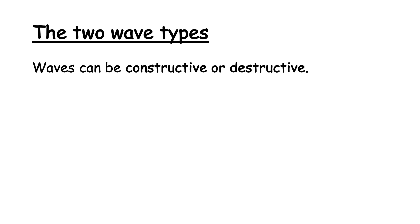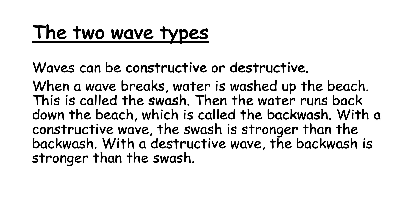Moving on to lesson three, we're going to have a look at two types of waves: constructive or destructive. When a wave breaks, water is washed up the beach — this is called the swash. Then when water runs back down the beach, that is called the backwash. With a constructive wave the swash is stronger than the backwash, whereas with a destructive wave the opposite is true — the backwash is stronger than the swash. There's a more powerful backwash, a more powerful movement of water moving back down the beach than up the beach, with a destructive wave.